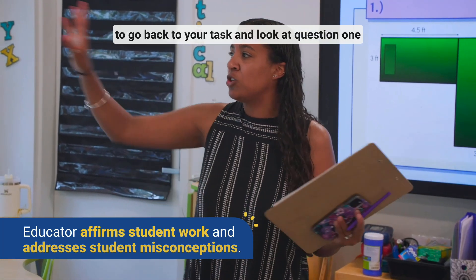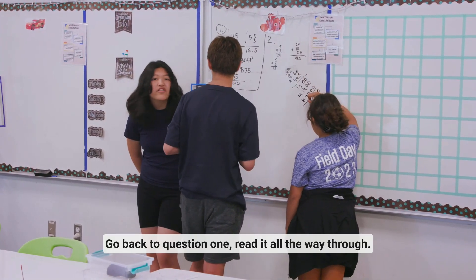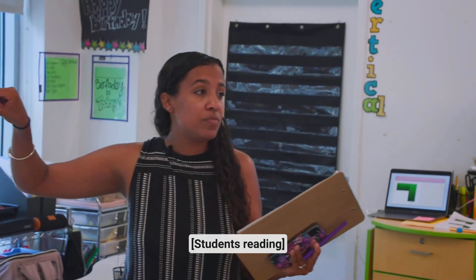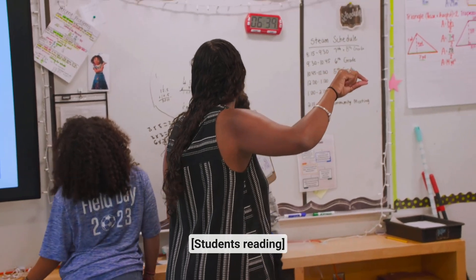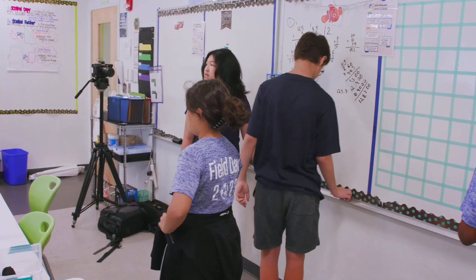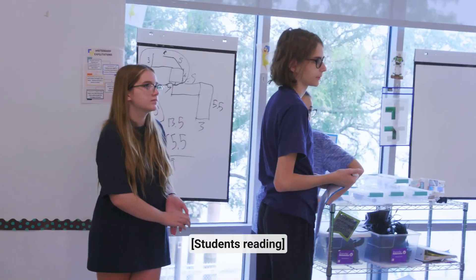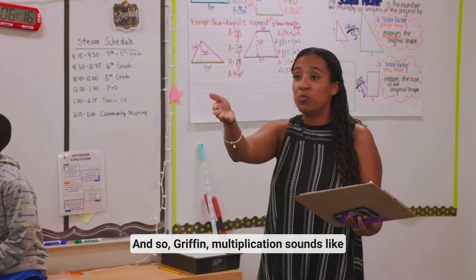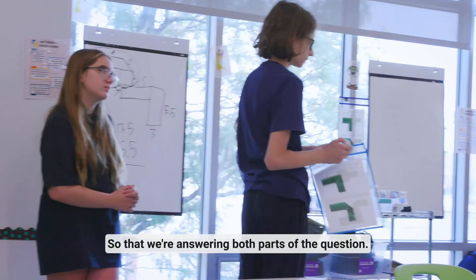One thing that I'm noticing — I want everyone to go back to your task and look at question one, and read question one all the way through. Everyone take 30 seconds to do that. What do we notice about that question? So there are two parts of the question: first we're finding the area, and then we're finding the cost. So as you're working, make sure that you're reading the question all the way through so that we're answering both parts of the question.